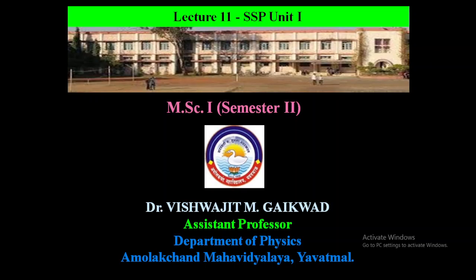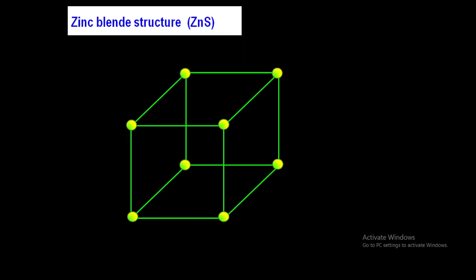Hello students, this is our lecture number 11, Solid State Physics, Unit number 1. Today we are going to see what is zinc blende structure and details about it. The famous compound zinc sulfide exists in two structures: one is zinc blende structure and the other is wurtzite structure. Zinc blende structure is a cubic structure and wurtzite structure is a hexagonal structure. In our course, we will study the zinc blende structure of ZnS.